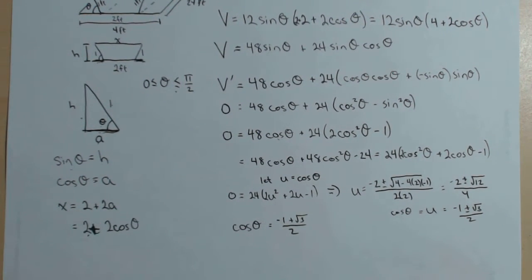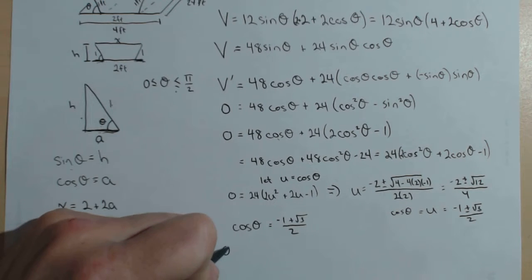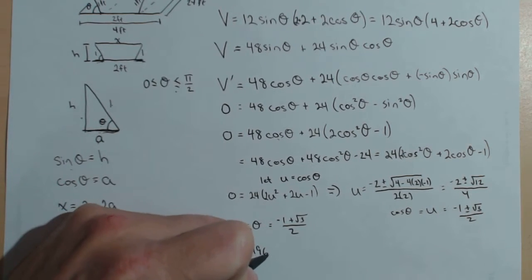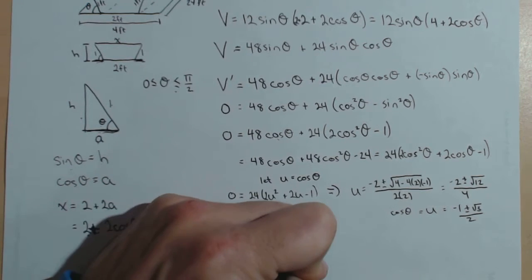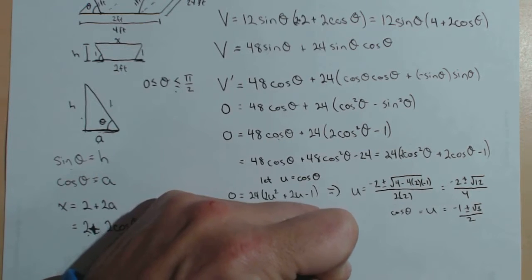All right. Using an inverse trig function, solving this for theta, we get theta is approximately 1.196 radians. Or, we'll put this in parentheses, or 68.53 degrees.